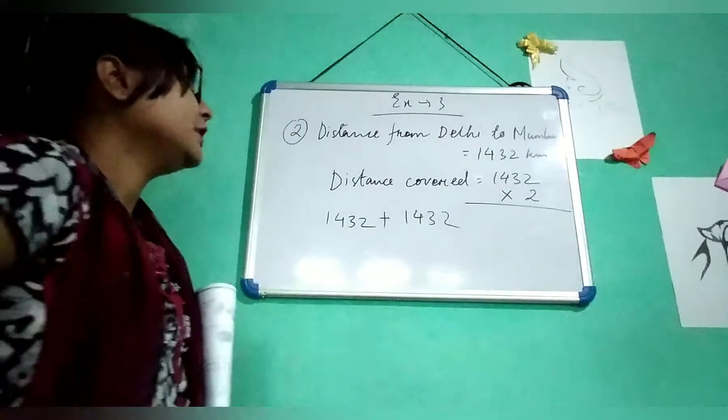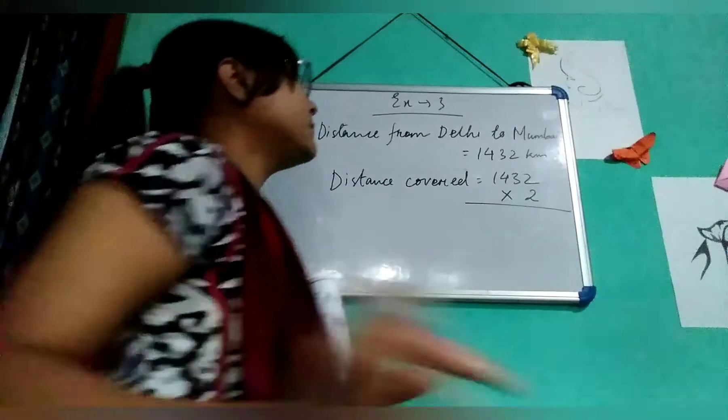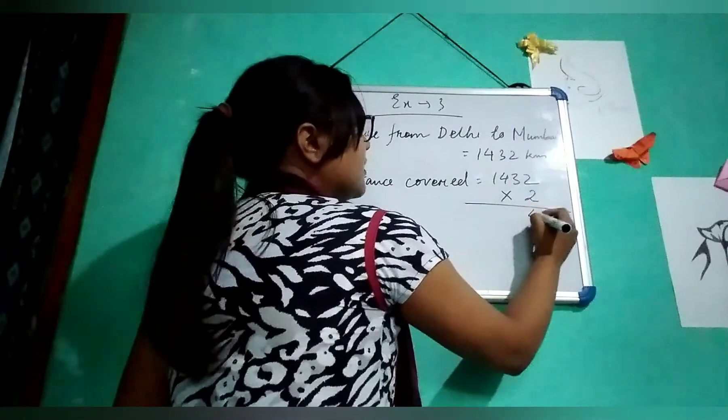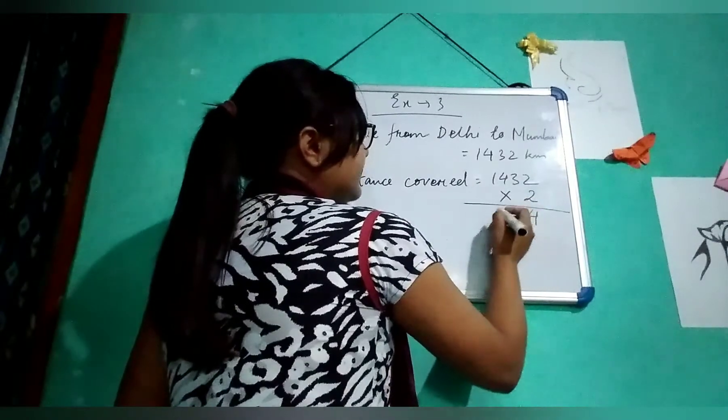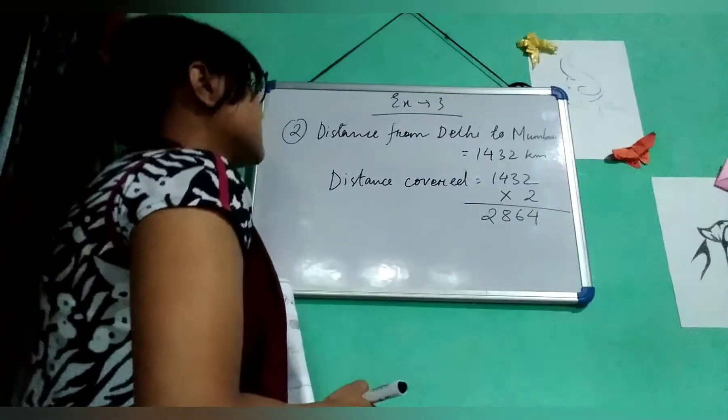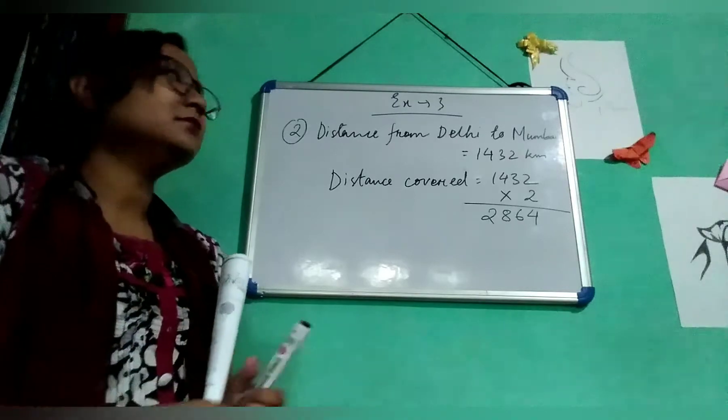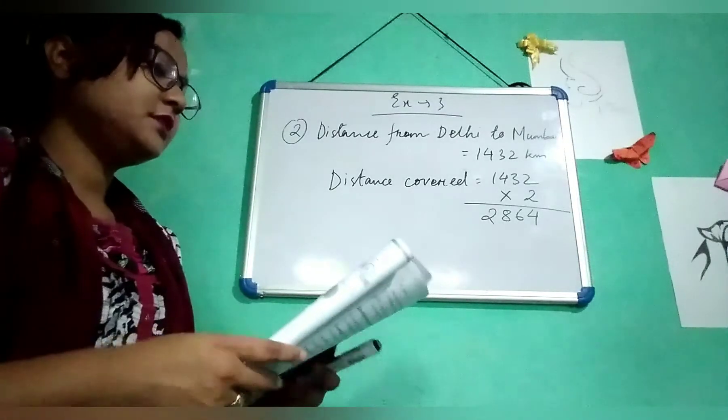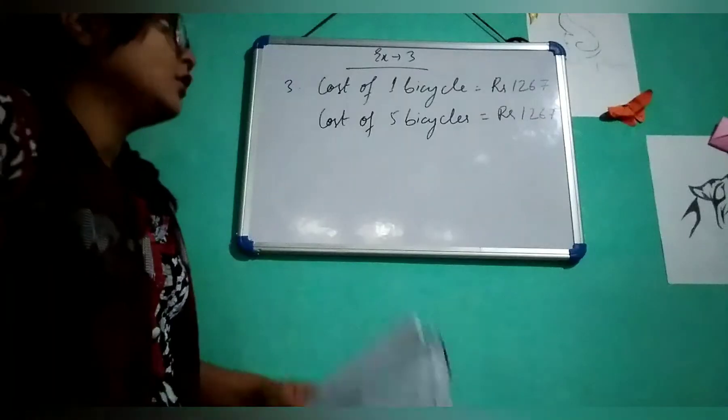You need to multiply each number by 2. 2 times 2 is 4, 3 times 2 is 6, 4 times 2 is 8, 1 times 2 is 2. So it will be 2,864 km he has covered. So this is number 2, very simple. You just read the question once or twice, you will understand.